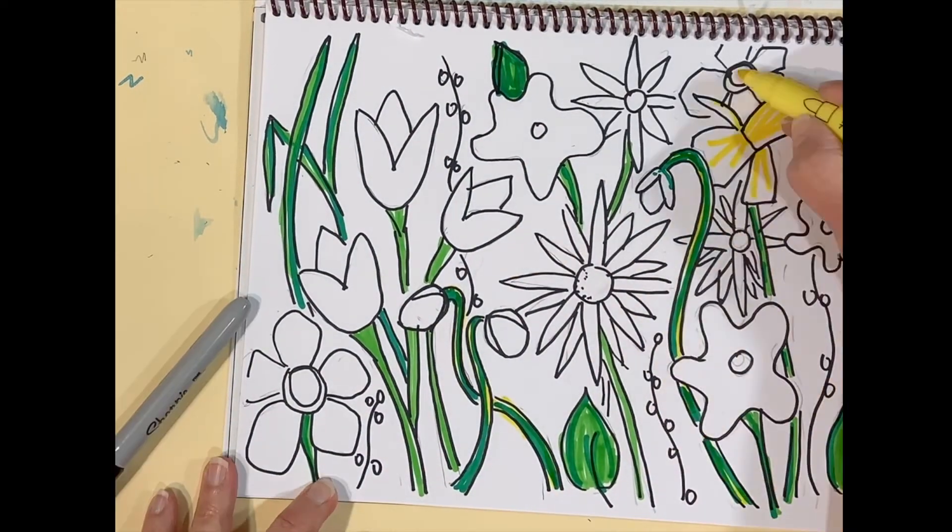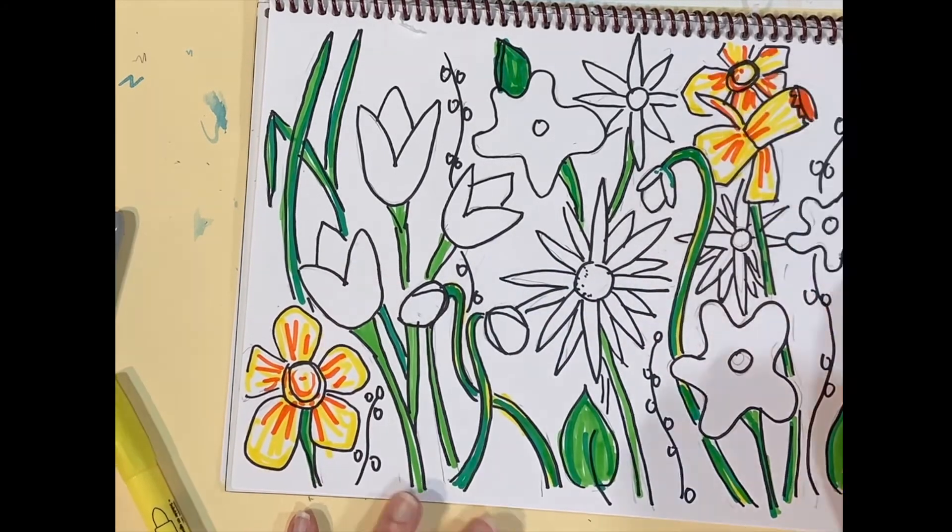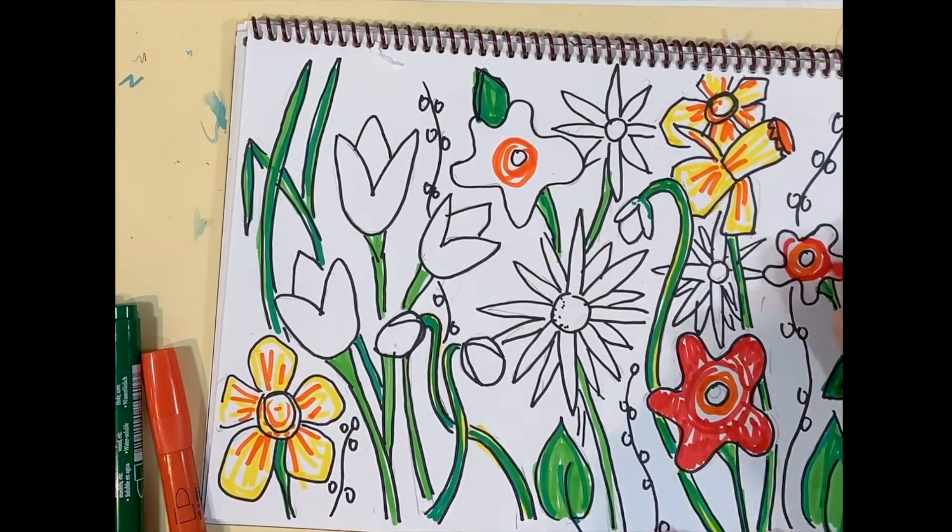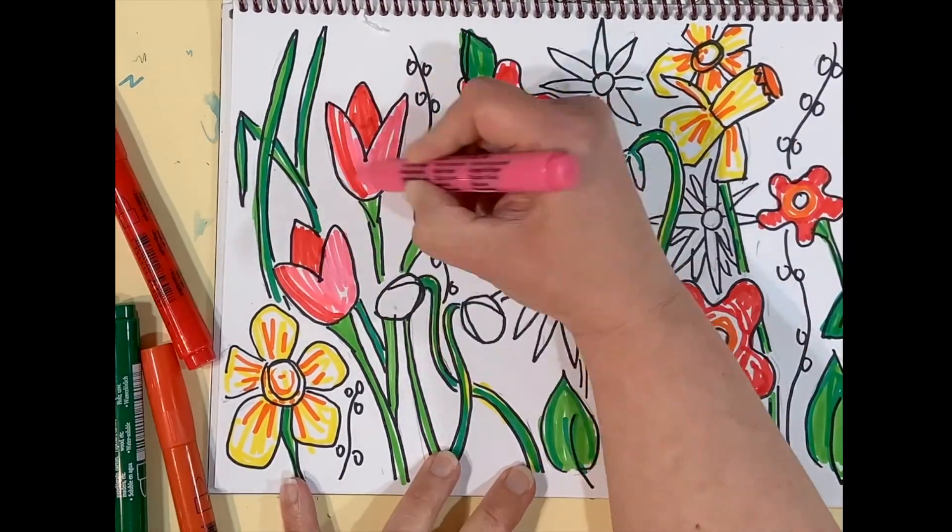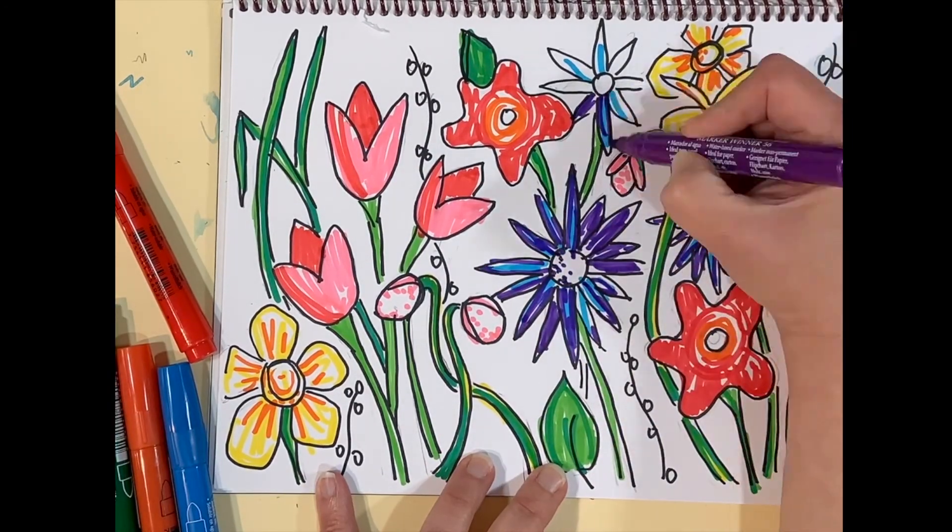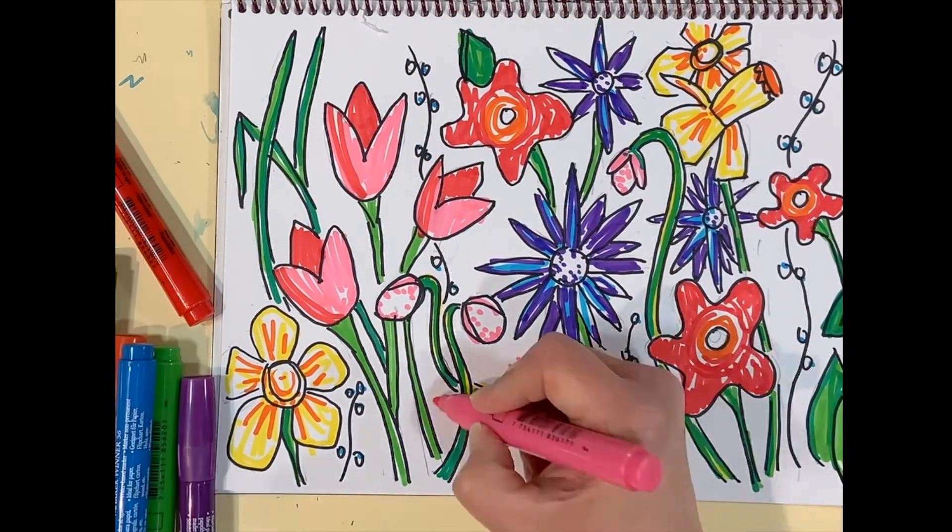What I did to make it easier for myself is I tried to find all the stems first and I used two different colors of green for stems and leaves. Then I went back over everything in color and one crazy thing I did is dots to fill it up.